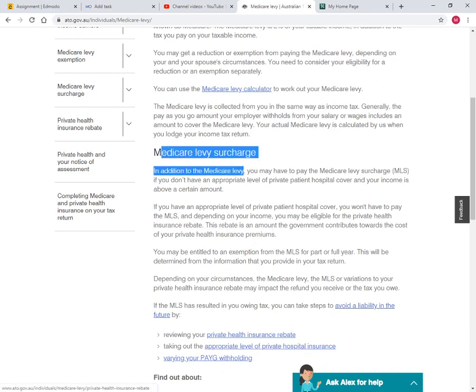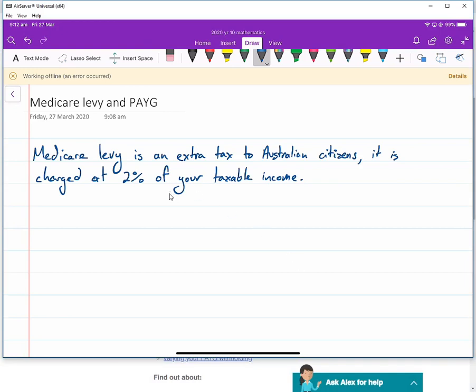For example, a teacher like myself, I actually don't earn enough money to have this Medicare Levy surcharge applied. So it could be more than 2% if you have to pay a Medicare Levy surcharge if you are a high income earner. For most people, it's just 2% of your taxable income.